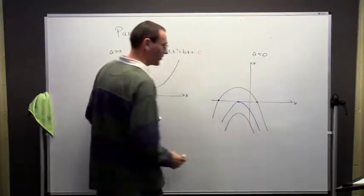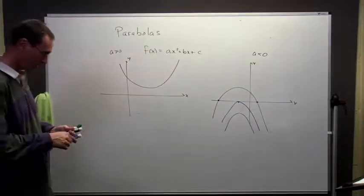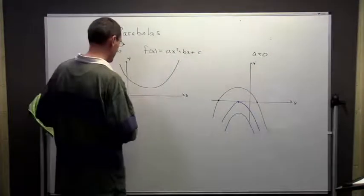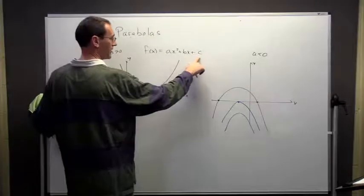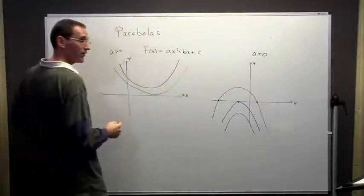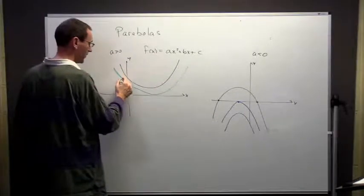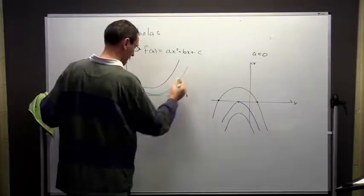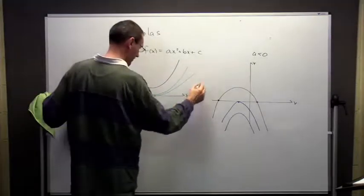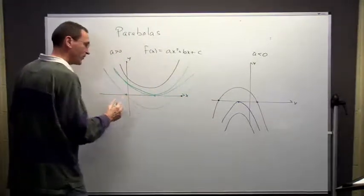Over here, if a is positive, notice here there's no roots. But again, if I make c smaller, I can shift it down, so there's no roots, but I've shifted down a little bit more, I can have a single root. If I shift it down even further, I could have two roots.